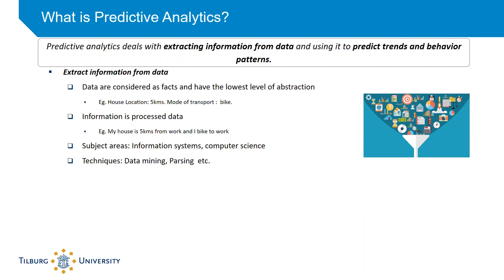When it comes to extracting information from data, data is nothing but facts that have the lowest level of abstraction. For example, take these two data points: the location of the house is five kilometers and the mode of transport is bike. When you process this data, you can create information out of it. This transformation of data to information often involves adding some sort of context to it.